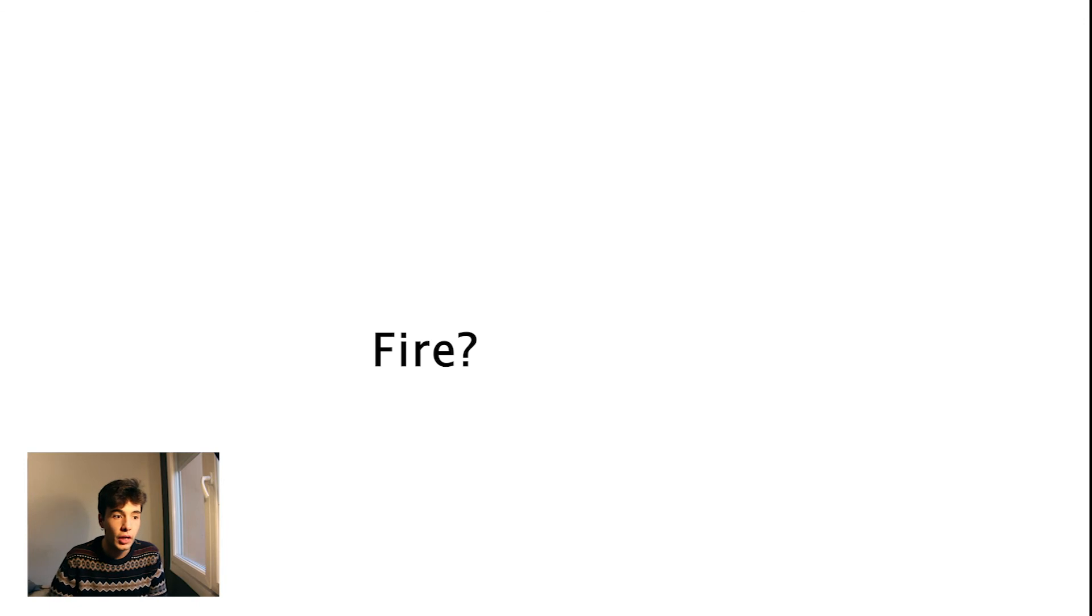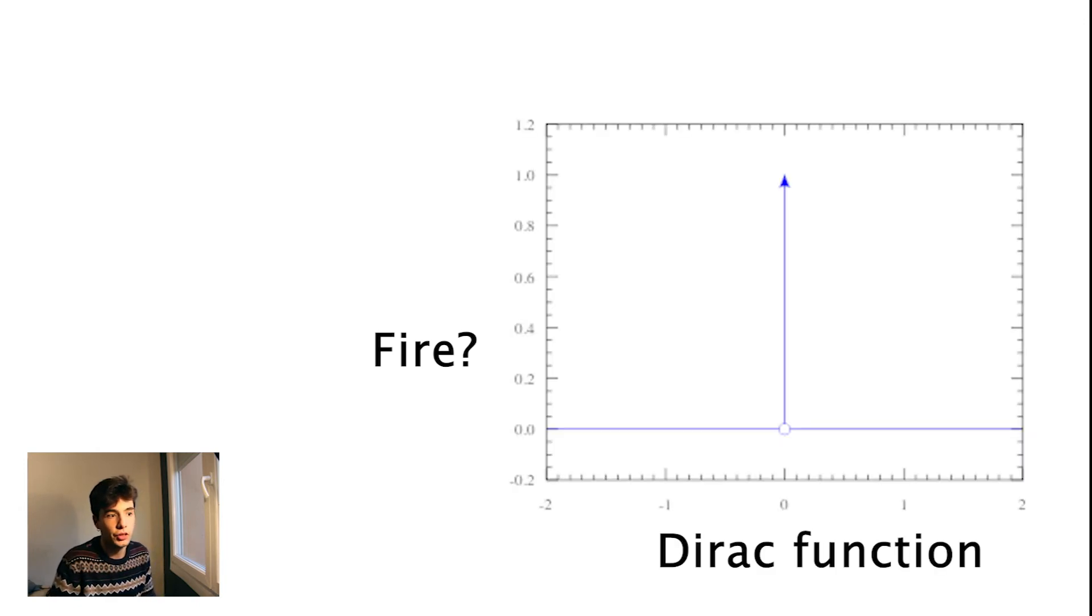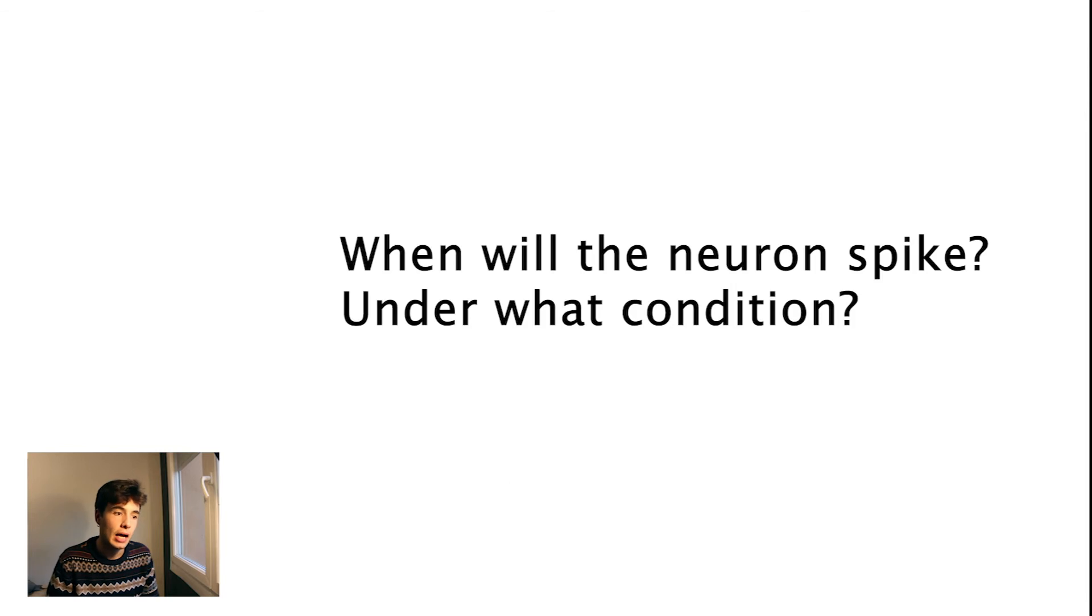And then, what about the fire? Well, we're going to use a Dirac function at the moment of the spike. And the last question is: when will a neuron spike, under what condition?